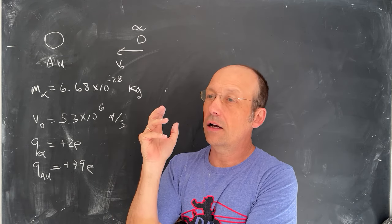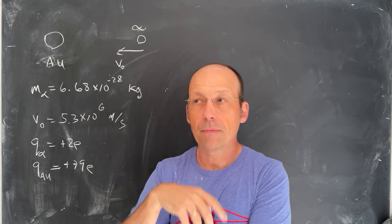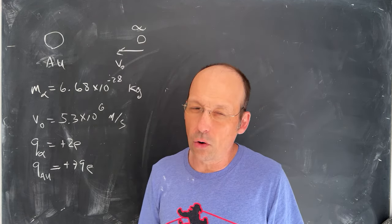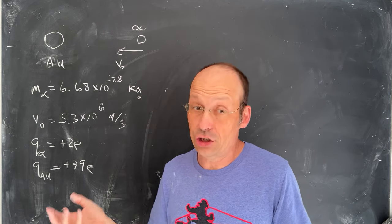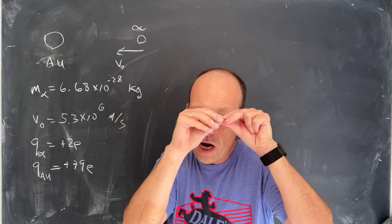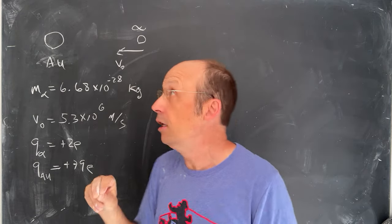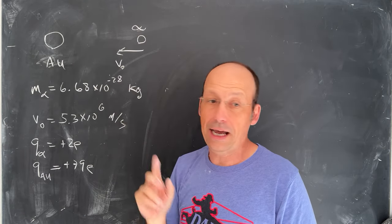So there was this experiment, the Rutherford gold foil experiment. And the nice thing about gold, other than it doesn't interact with oxygen so it stays shiny, is that it's very, very, very soft and you can smash it down and make very, very, very thin sheets. So you can get a sheet of gold that's approximately one atom thick.